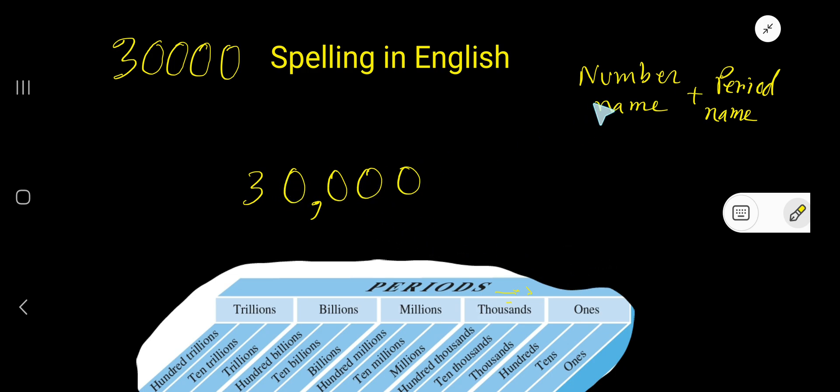Write the number name. In the thousands period we're getting the number 30, so write 30: t-h-i-r-t-y. Then you have to write the period name. 30 is in the thousands period, so write thousand: t-h-o-u-s-a-n-d. Don't add s. In the case of ones period, we don't write the name of ones period. So this is thirty thousand.